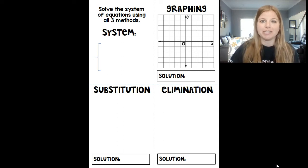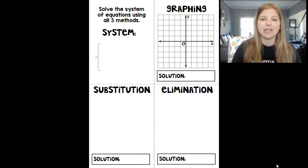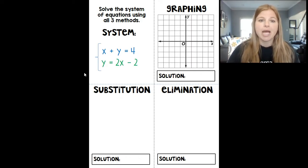Hi everyone, thank you so much for joining me on this video today where we're going to solve a system of equations using all three methods: graphing, substitution, and elimination. And we're going to see something very special happens with the solutions. Given this system right here of x plus y equals 4, a nice equation that's in standard form, and this other equation y equals 2x minus 2, which is in slope intercept form, we're going to solve this system and see something very special about the solution.